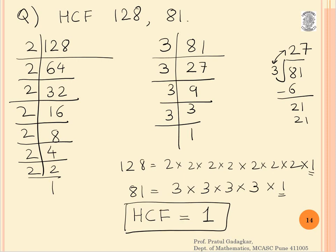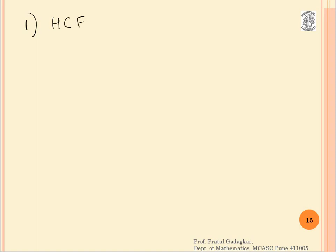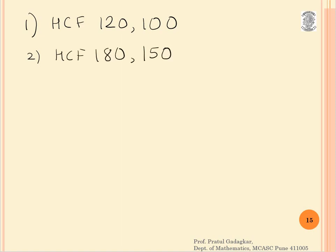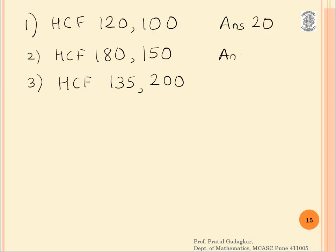I hope the concept of HCF is clearly understood. Here are three practice exercises: First, find HCF of 120 and 100 — the answer is 20. Second, find HCF of 180 and 150 — the answer is 30. Third, find HCF of 135 and 200 — the answer is 5. I hope the concept of Highest Common Factor is understood from all these examples.